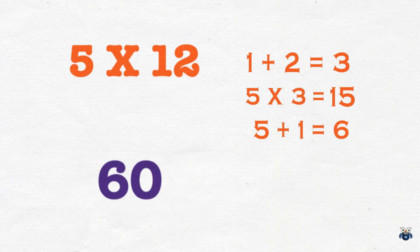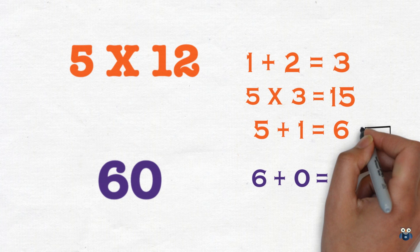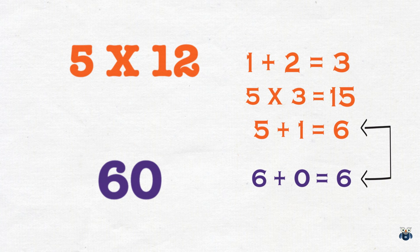Now, I am sure you got 60 as your result. 6 plus 0 is 6. This is our second result, which matches with our first one. This means, our answer is correct.